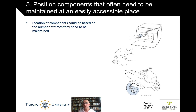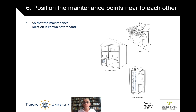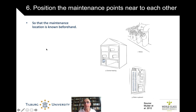Components that need to be replaced often should be placed in an easily accessible location — like engine oil, a scooter wheel that suffers a lot of wear, or toner cartridges. Put all maintenance points together: the meter cupboard, all the valves, the central heating connections in one place. These real-world examples are so logical we take them for granted, but in practice you often have to walk from one maintenance point to another, which is cumbersome and must be considered during design.